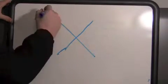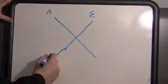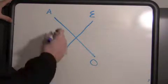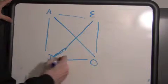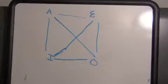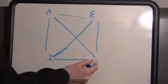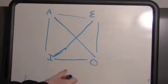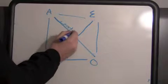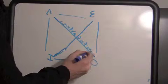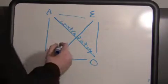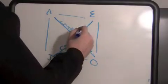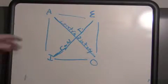The modern square of opposition is very simple. Start with an X shape, then place your A proposition, your E proposition, your I proposition, and your O proposition at the corners. Draw lines to make it into a square. What the modern square says is that the A proposition always has the opposite truth value to the O proposition — so we write that this relationship is contradictory. Likewise, the E and the I proposition are also contradictory.